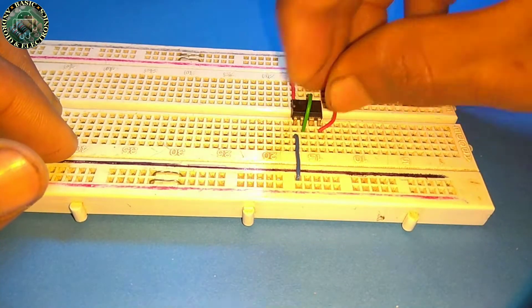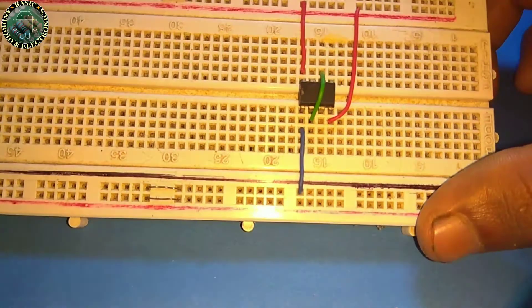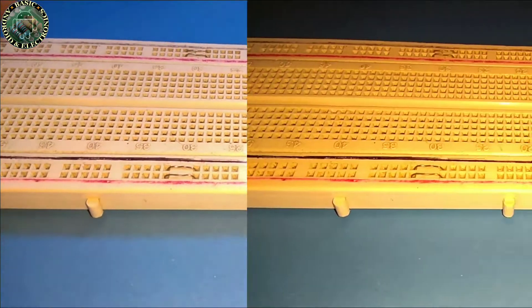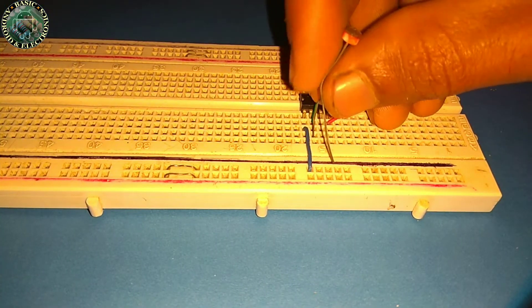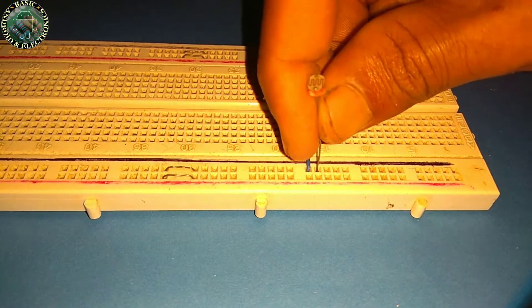Now connect pin 6 to pin 2 of the IC. Connect pin 2 of the IC to the negative rail of the breadboard by using LDR.